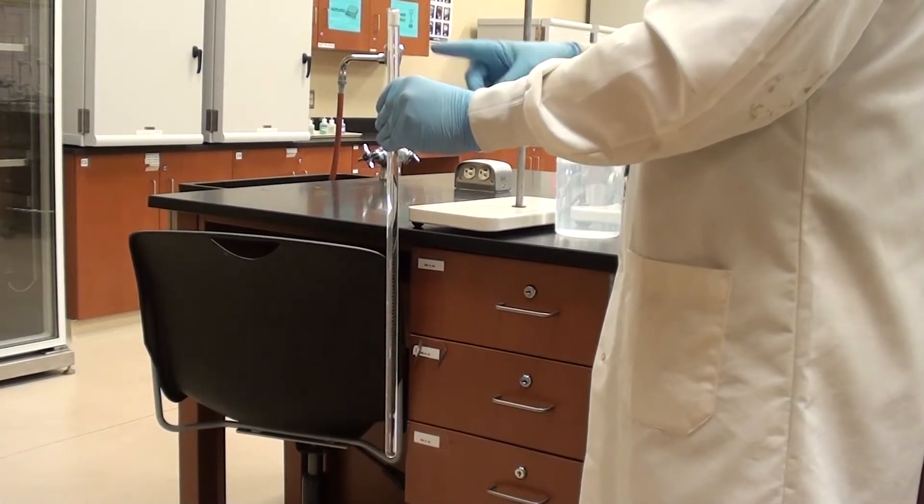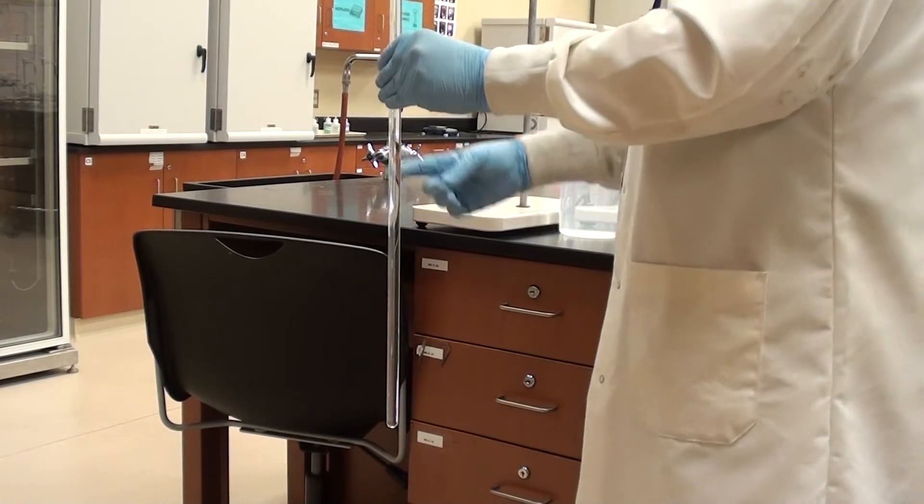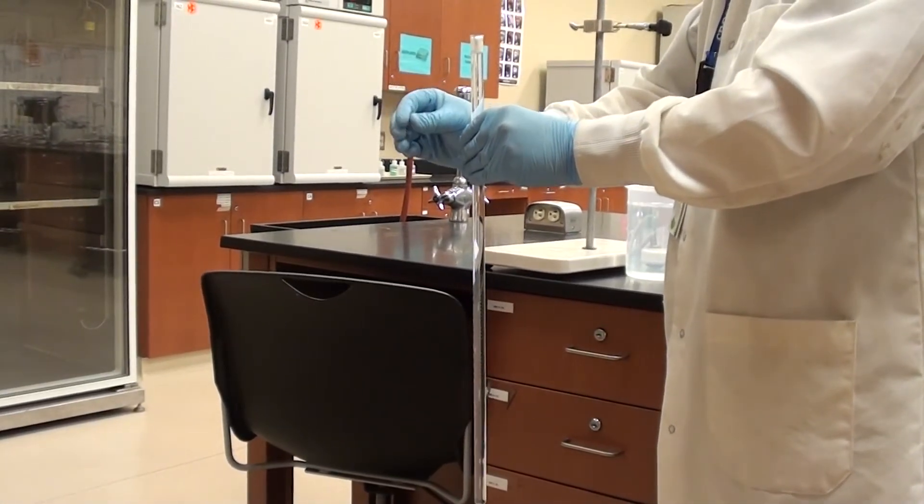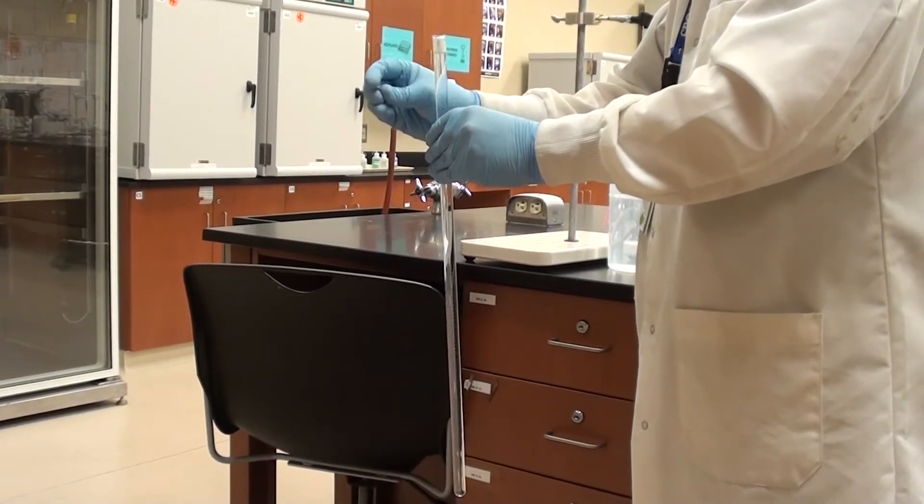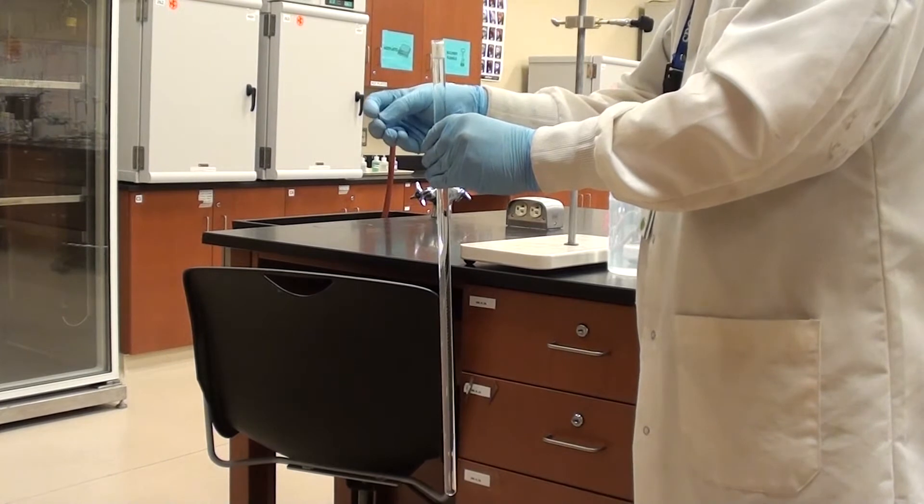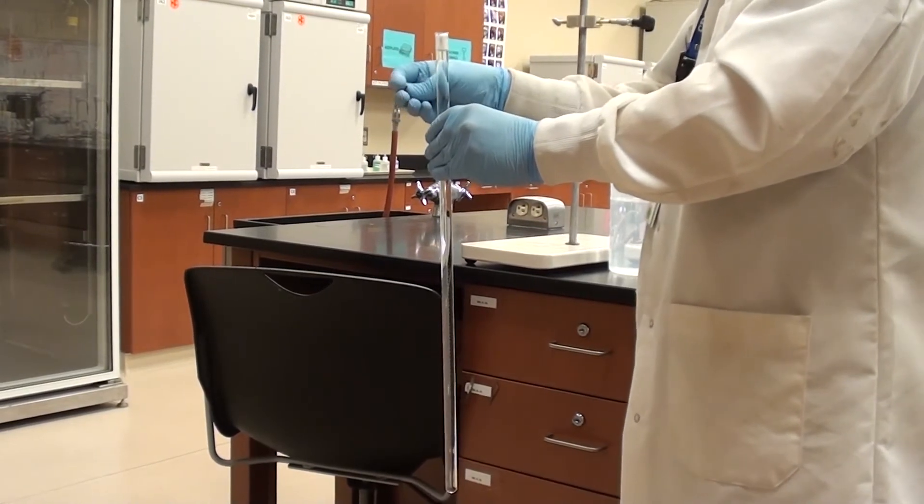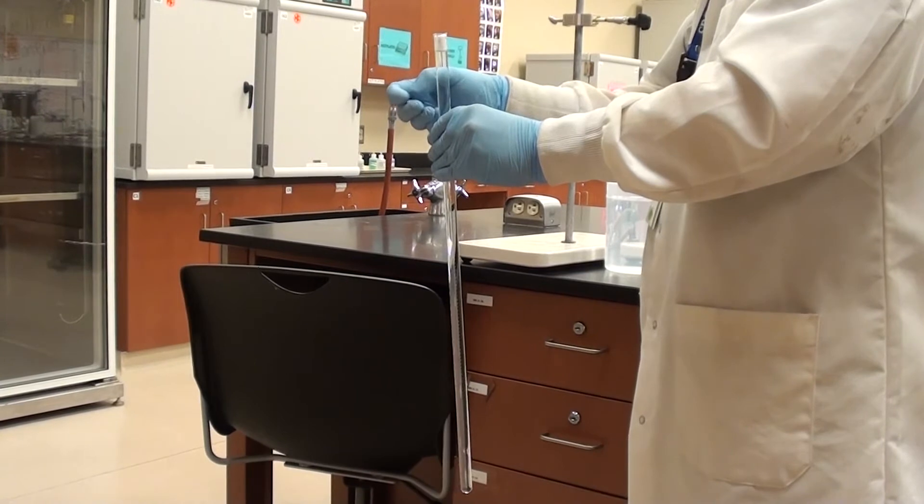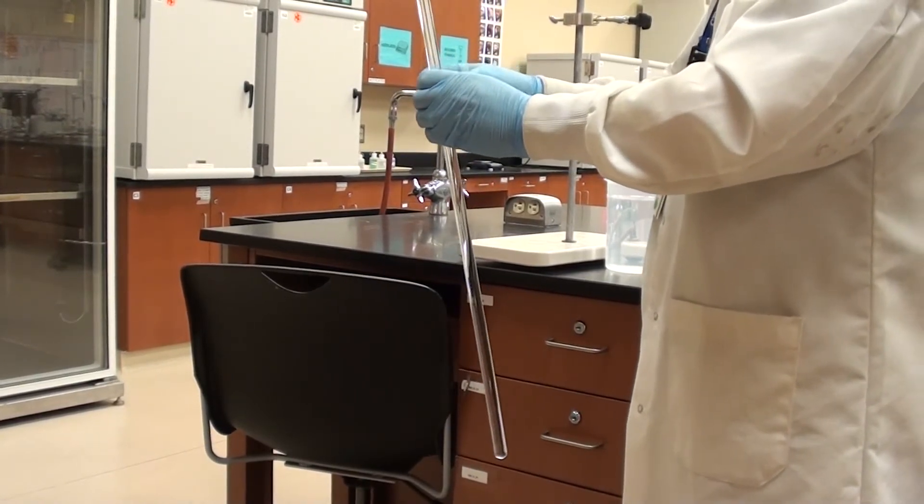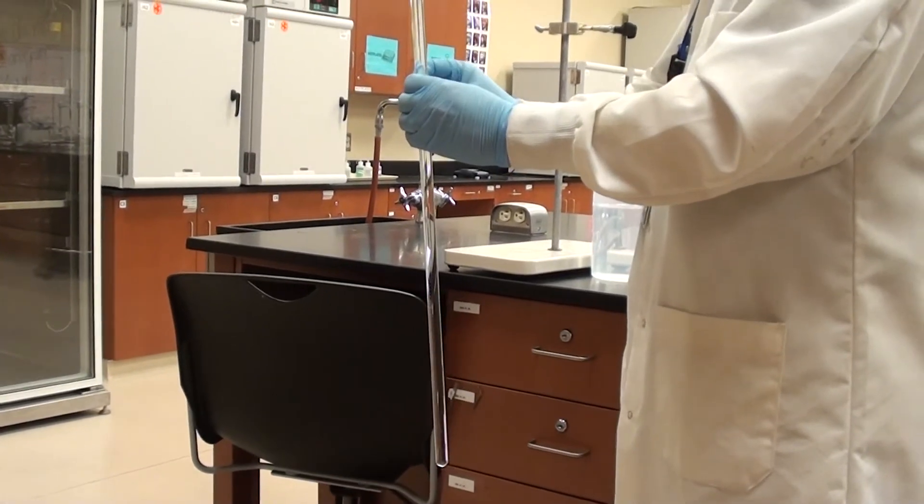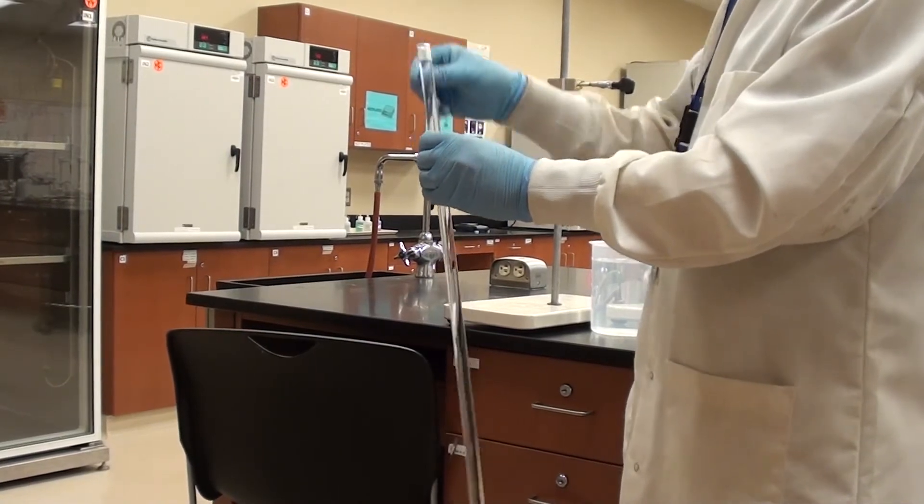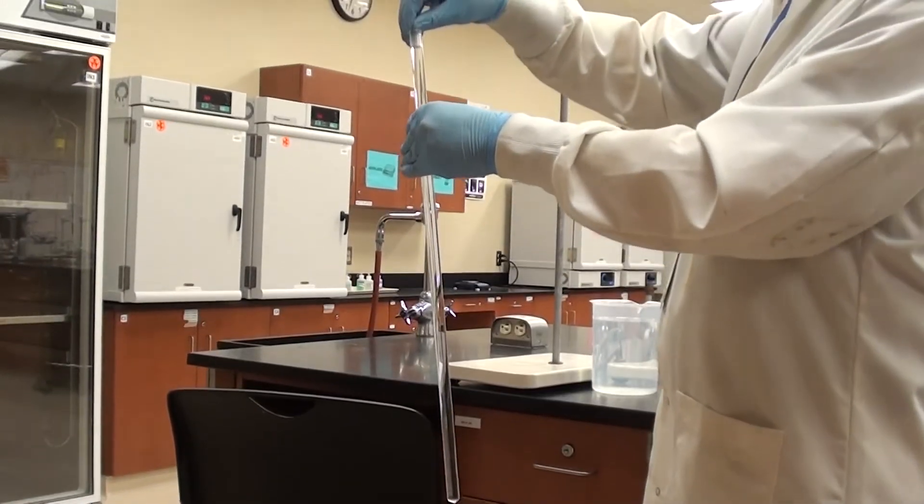So here we've got our eudiometer tube layered with the water on top, the HCl on the bottom. This is the magnesium I cut earlier and I'm going to just sort of screw that up into a very loose ball of sorts. And what I'm going to do is put this into the eudiometer tube. There we go, I'm just getting that into a ball here. Alright.